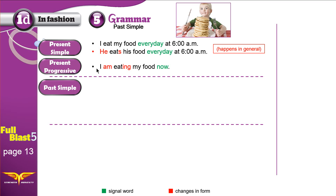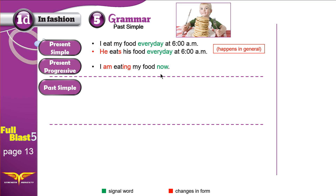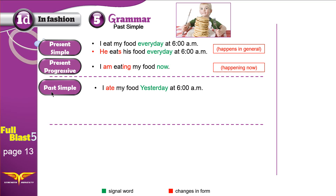Present progressive: I am eating my food now. The signal word is 'now' — this is happening right now at this moment. You can use 'at the moment,' 'at this moment,' 'now,' or 'right now.'